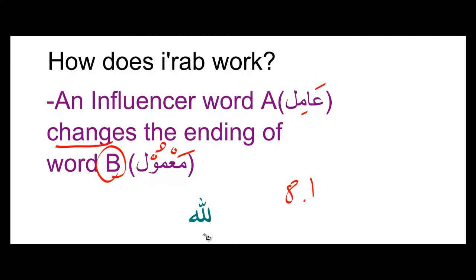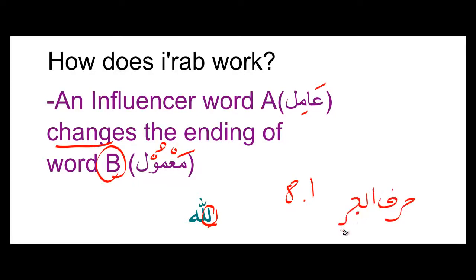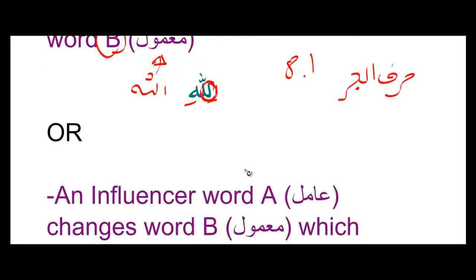But let's say we didn't know, because most texts in Arabic don't have any harakaat. We know that this is Laam because it doesn't have an alif, and we know that Laam is an amil because it's a harf al-jar as we learned in lesson 8. We know that harf al-jar changes the ending of the word it's attached to to a kasra. So it becomes lillahi — why? Because of this Laam. So this Laam is our amil and the word Allah is our ma'mool.